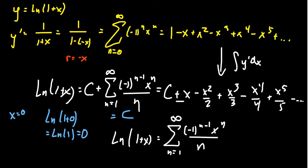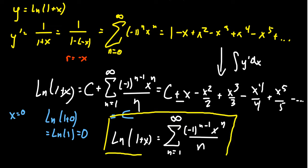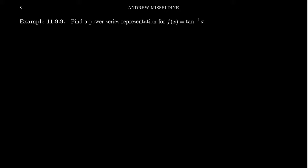Therefore, we see we have the following power series representation. Because our function — the natural log of 1 plus x — is the antiderivative of a function with a known power series representation, we were able to find a power series representation for that function. We want to do the same thing for f of x equals arctangent of x. The idea is we know its derivative: f prime of x equals 1 over 1 plus x squared, and we want to find a power series representation for this function.